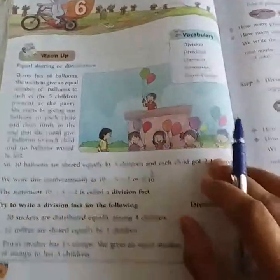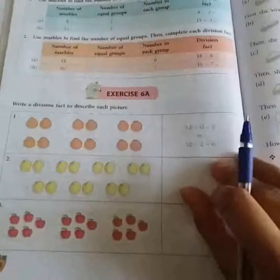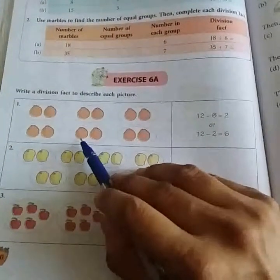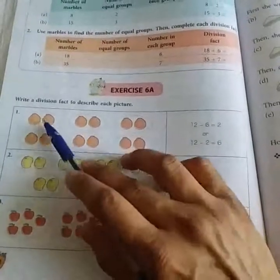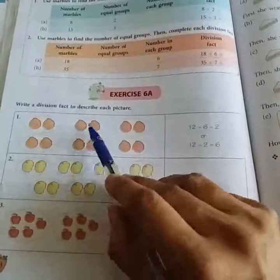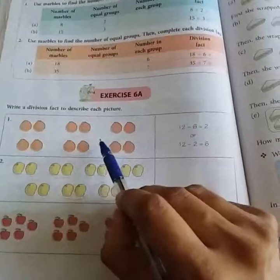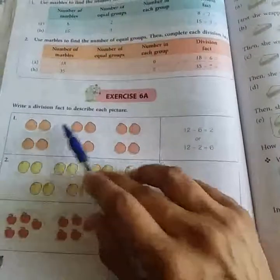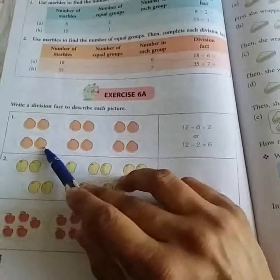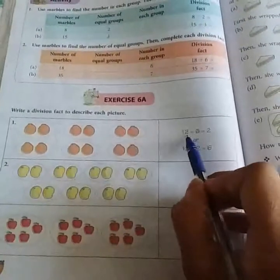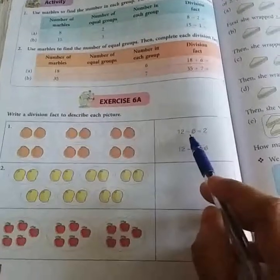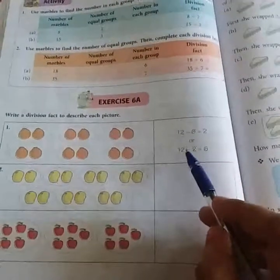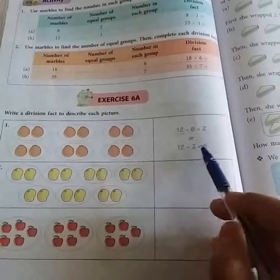Now let's start. We will start with the first exercise. This is exercise 6A. Here you can see we are having some pomegranates and all these pomegranates are equally grouped. Here we are having 6 groups of pomegranates. Pomegranate means anaar. And total number of pomegranates is 12. So, when we are having 12 pomegranates and we are having 6 groups of that, that means 12 divided by 6 is 2. Or we can say 12 divided by 2 is equal to 6.